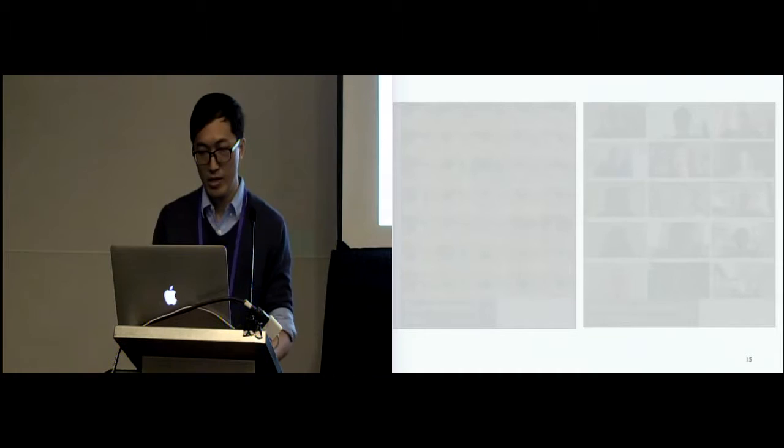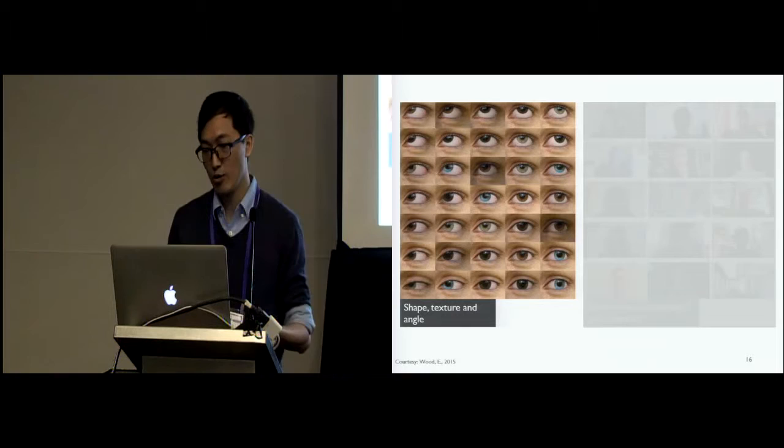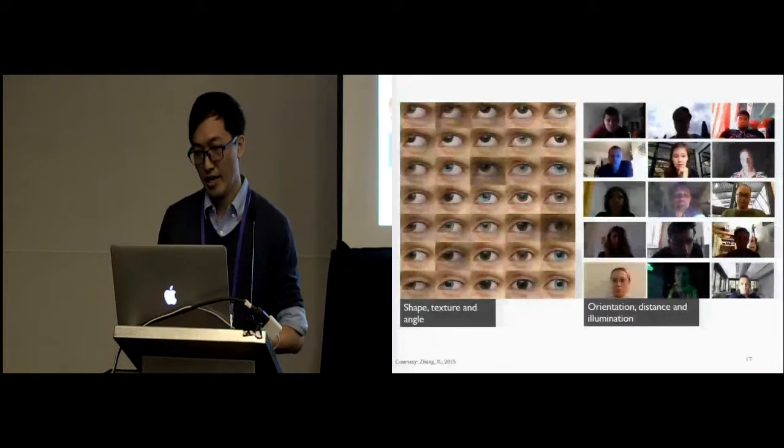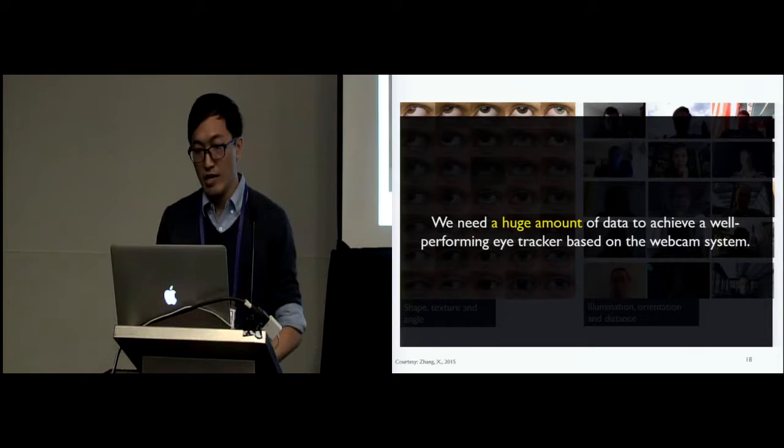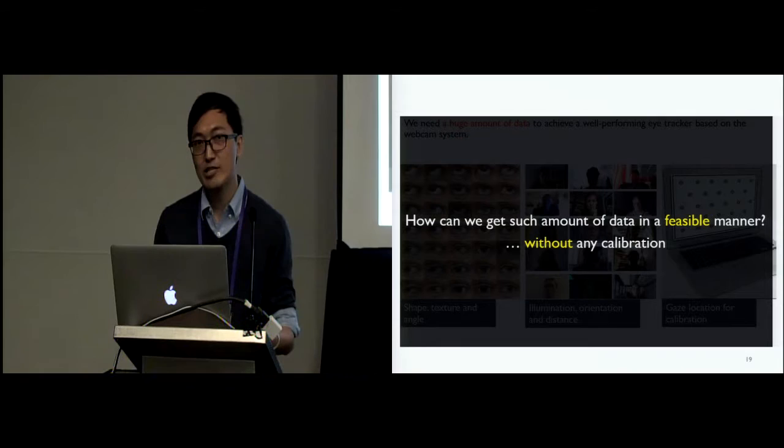And in real-use situations, we also need to handle the issues of occlusions, reflections, and head pose variants. So basically, if you want to build a gaze tracker from webcam data, we need to be able to handle different shapes, textures, angles, with different head orientations, head-to-screen distances, and under different illumination conditions. That means we need a huge amount of data to get a well-performing eye tracker. The big question is, how can we get such amount of data in a feasible manner without requiring the user to go through a lot of calibration?